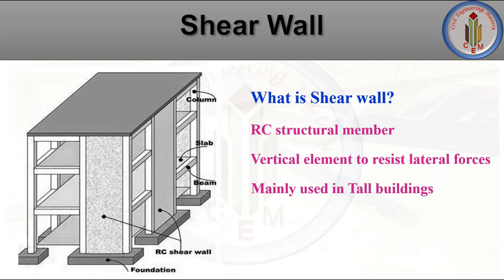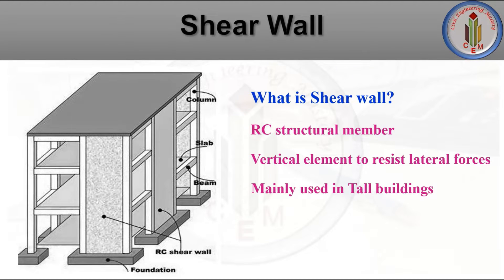A shear wall is a reinforced concrete structural member, similar to a column, beam, slab, and footing. It is a vertical member used mainly to resist lateral forces. Shear walls are mainly used in tall buildings to resist lateral forces such as wind forces and earthquake forces that arise due to the height of the building.